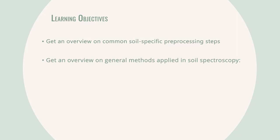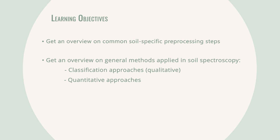These include, for instance, soil-specific pre-processing steps, such as the masking of pixels that mostly contain non-soil information. Then, we differentiate roughly between qualitative approaches that classify the composition of our data and quantitative approaches that actually allow the assessment of property abundances. Both methods have their advantages and disadvantages. As this course focuses on qualitative methods, we'll look at them in a bit more detail.